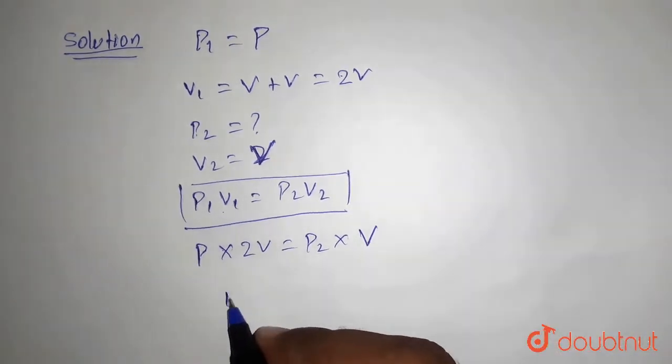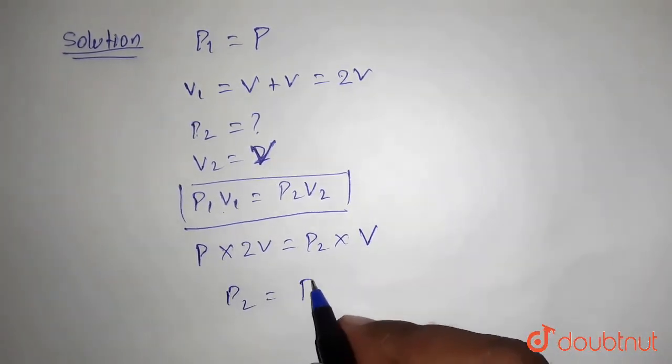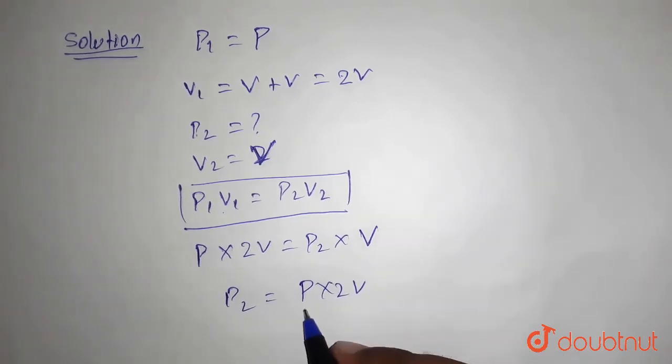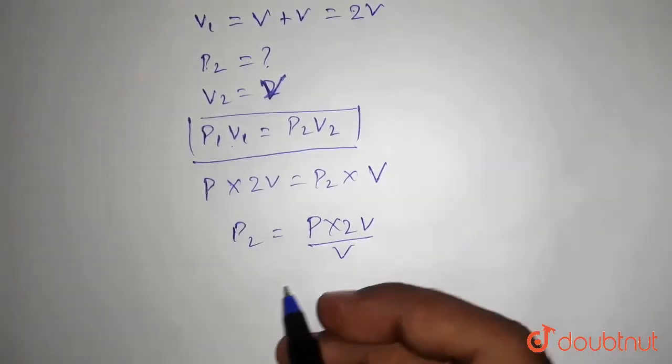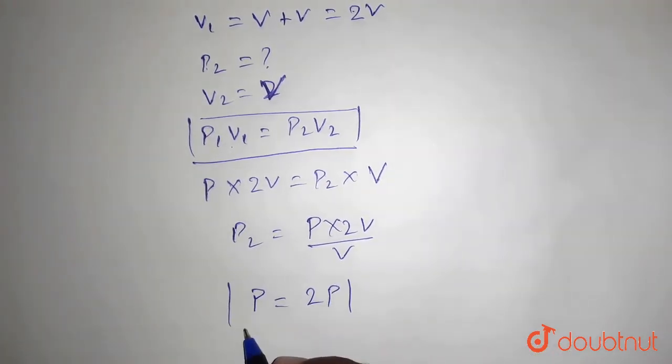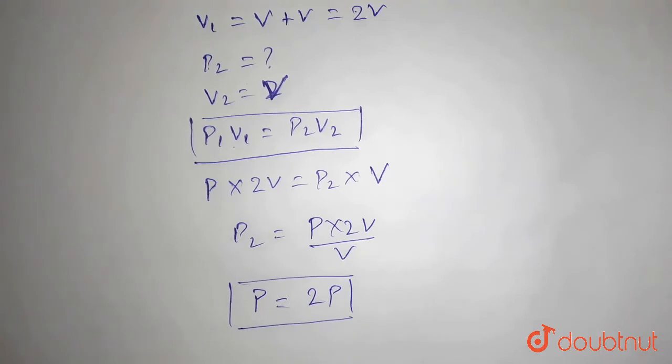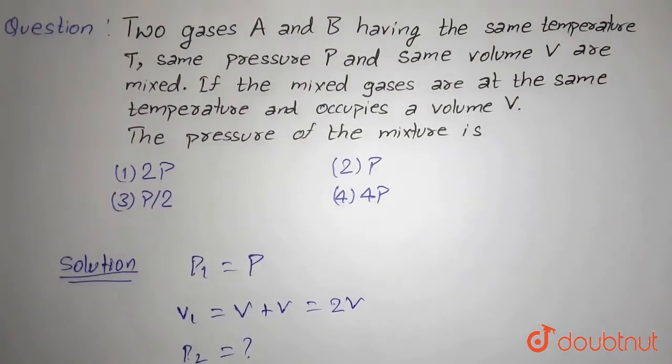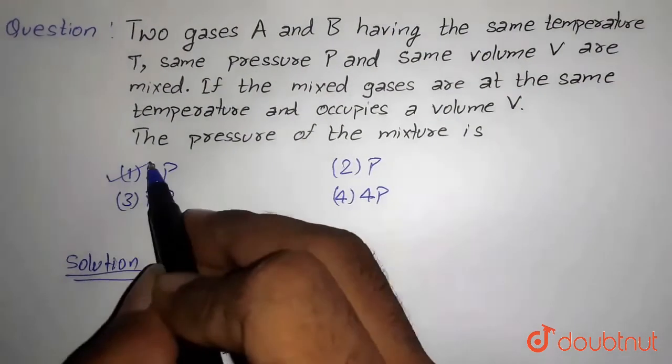So P1 is our P into V1 is 2V equals P2 and V2 is V. So P2 will be 2P. The pressure of the mixture is 2P. So the correct option is option number one, that is 2P. Thank you.